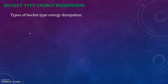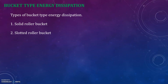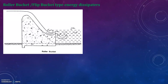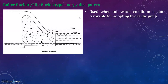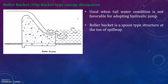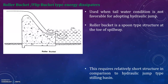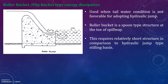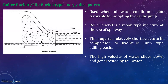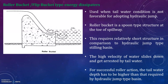For bucket type energy dissipation, there are three types: solid roller bucket, slotted roller bucket, and ski jump bucket. The roller bucket is a spoon-type structure at the toe of the spillway, used when tail water conditions are not favorable for adopting a hydraulic jump. It requires a relatively short structure compared to hydraulic jump type stilling basins. The high velocity water slides down and gets arrested by tail water; for successful roller action, the tail water depth has to be higher than that required by a hydraulic jump type basin.